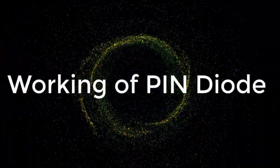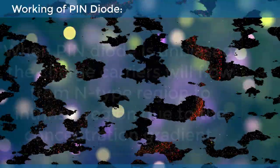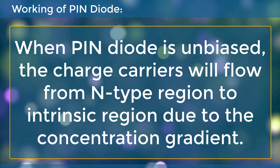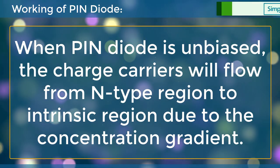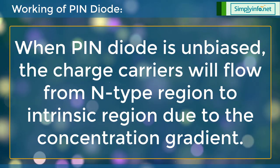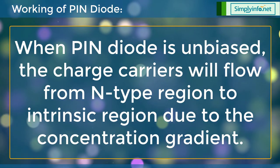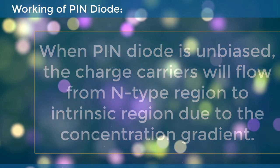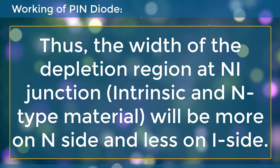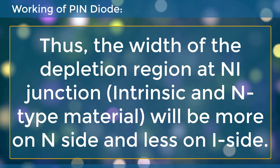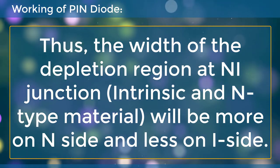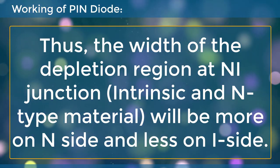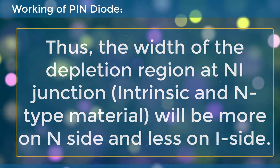Working of PIN diode: When the PIN diode is N-biased, the charge carriers will flow from the N-type region to the intrinsic region due to the concentration gradient. Thus, the width of the depletion region at the N-I junction (between intrinsic and N-type material) will be more on the N-side and less on the I-side.